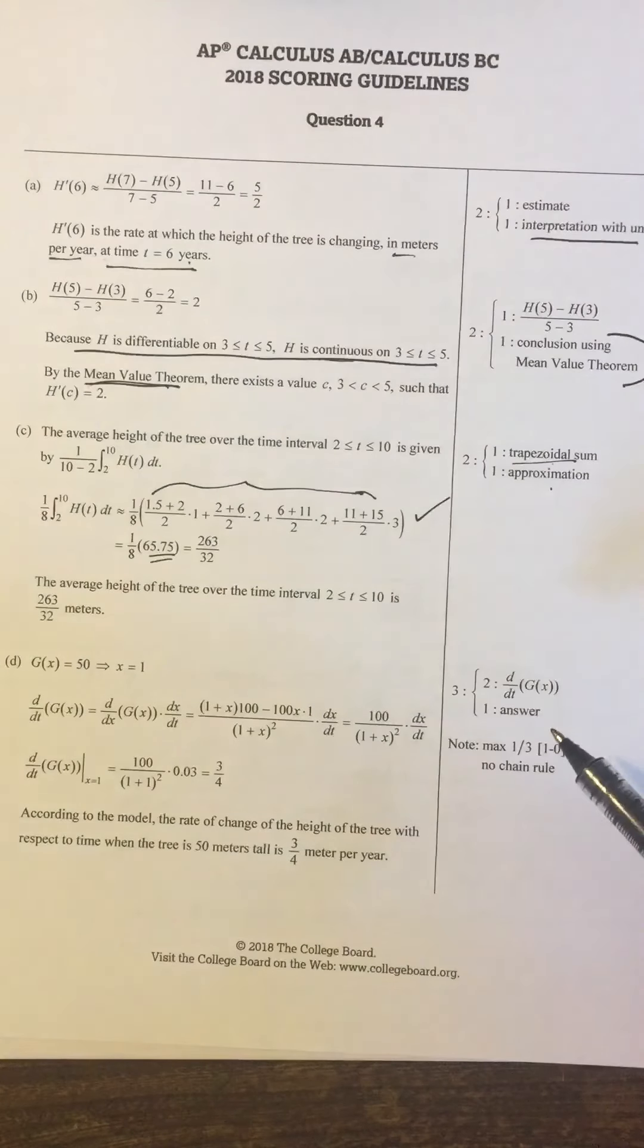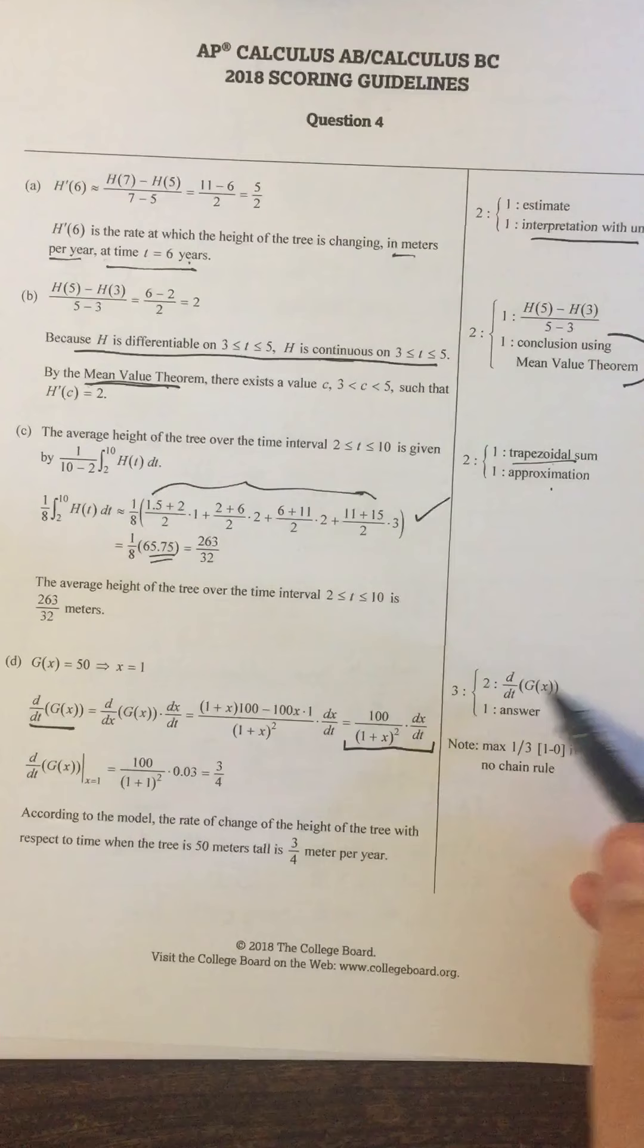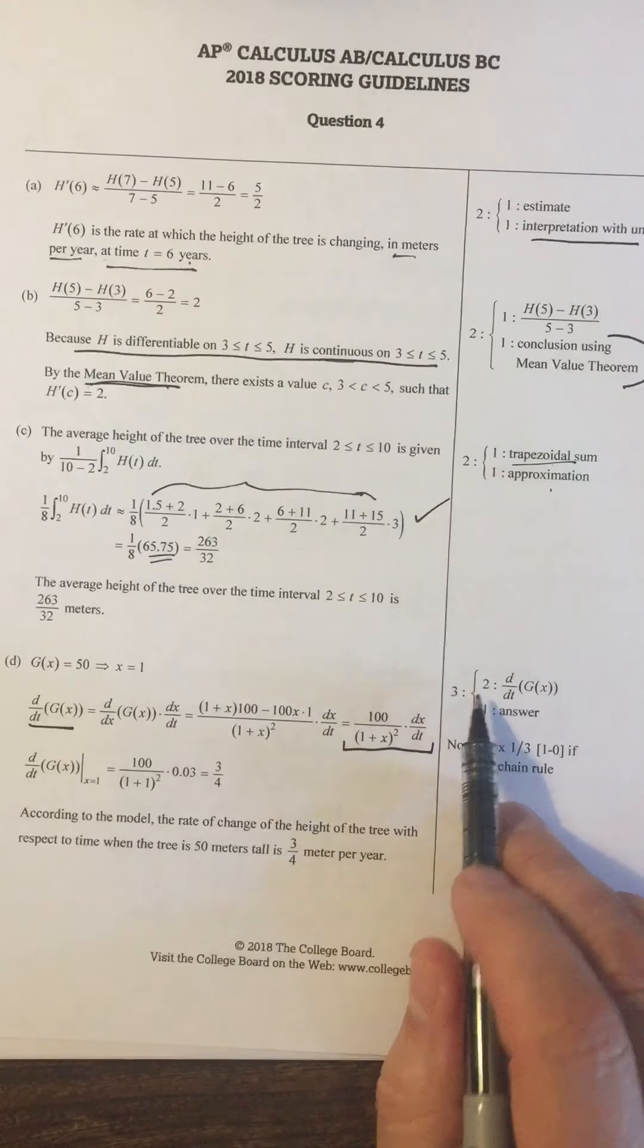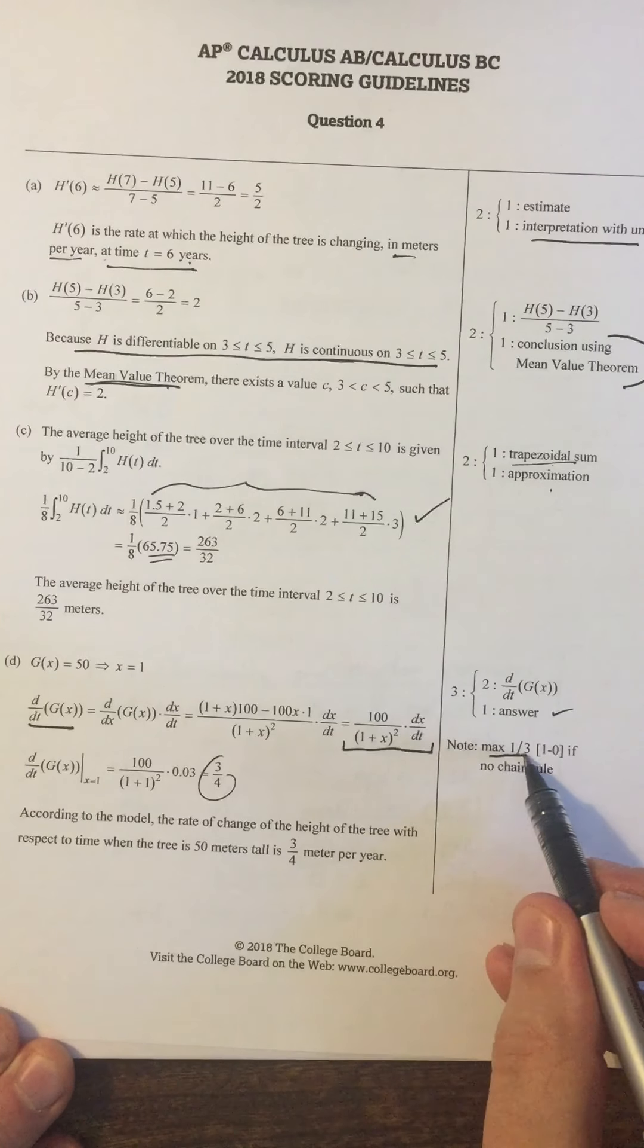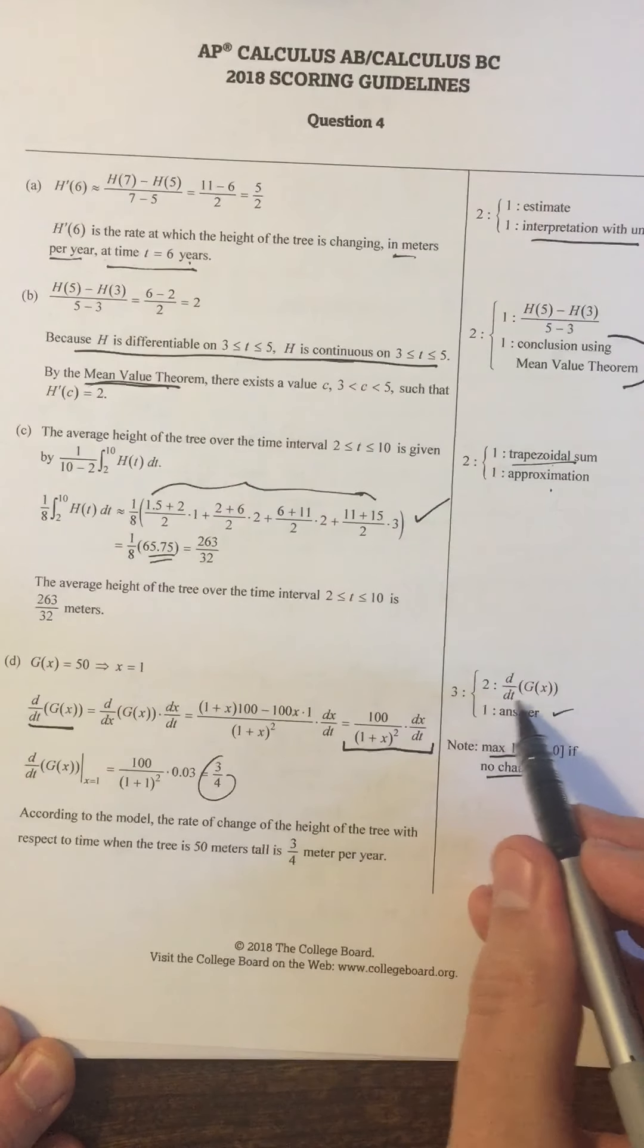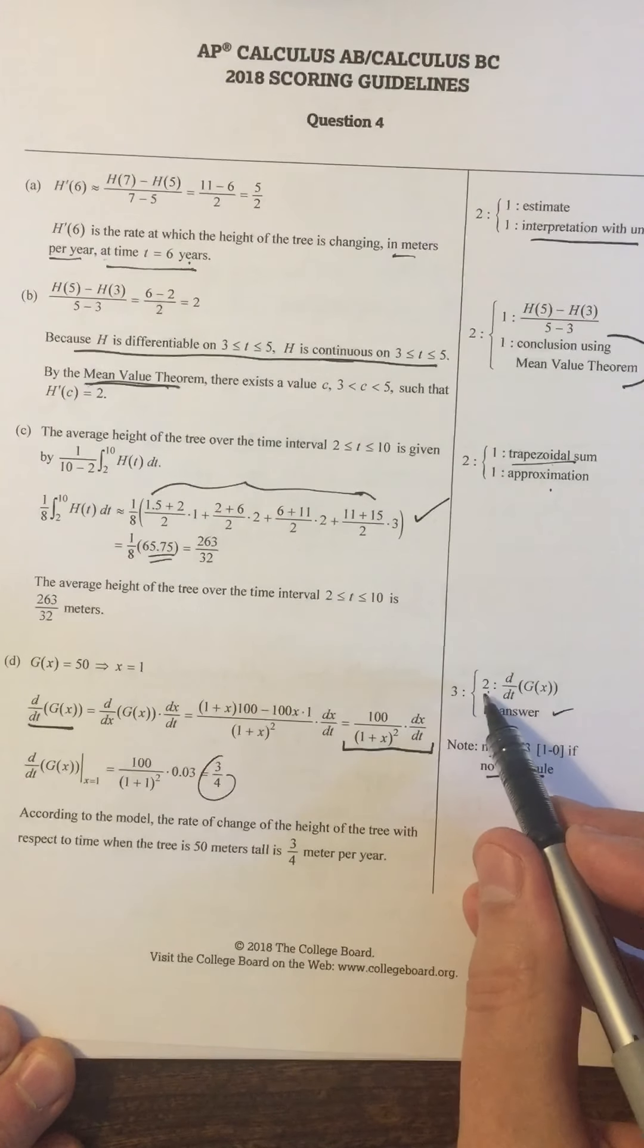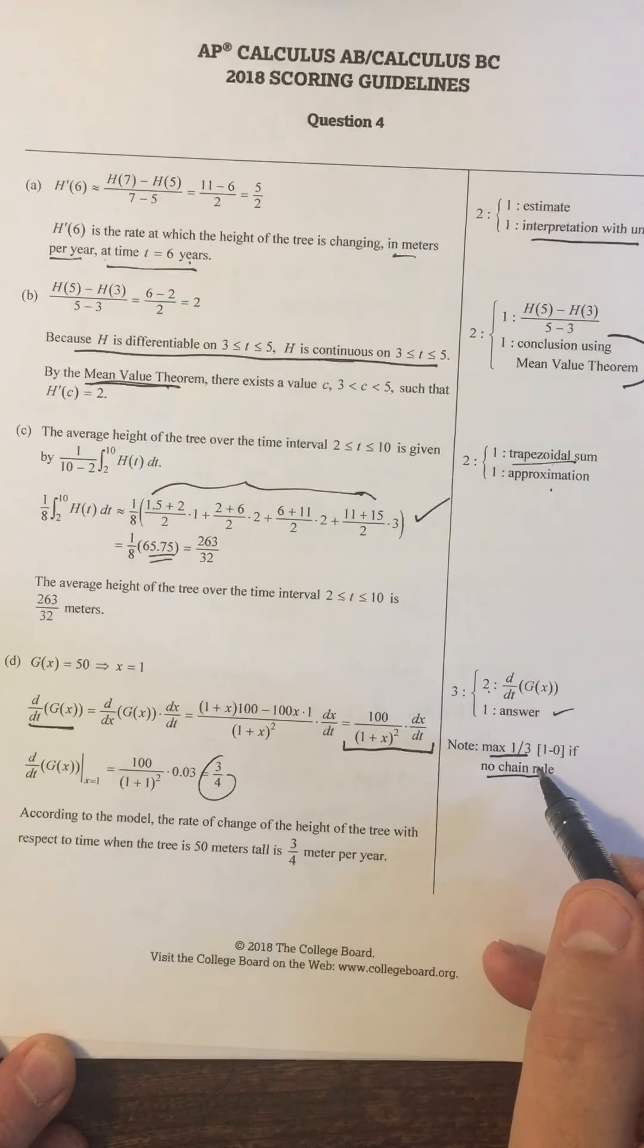And then part D, the only thing that's weird is I found this a little hard to interpret over here because they say you get two points for d/dt of g of x. So that means I have to get this whole expression in order to get the two points. And if any part of this expression is wrong, then I don't get that two points. I get zero points. Then I get one point for the answer. But what's weird, what's contradictory, is that they say max one out of three if no chain rule. But if I didn't have a chain rule, then I wouldn't have d/dt of g of x. So how would I get one point when I don't have it? If I don't have the chain rule, I'm not going to have this. So how do I have any points?